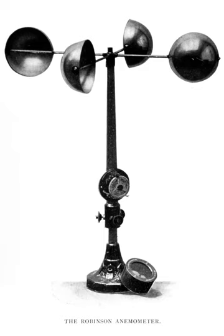Hot wire anemometers use a fine wire electrically heated to some temperature above the ambient. Air flowing past the wire cools the wire. As the electrical resistance of most metals is dependent upon the temperature of the metal, tungsten is a popular choice for hot wires. A relationship can be obtained between the resistance of the wire and the flow speed. Hot wire devices can be further classified as CCA, CVA, and CTA. The voltage output from these anemometers is the result of some sort of circuit within the device trying to maintain the specific variable constant, following Ohm's law.